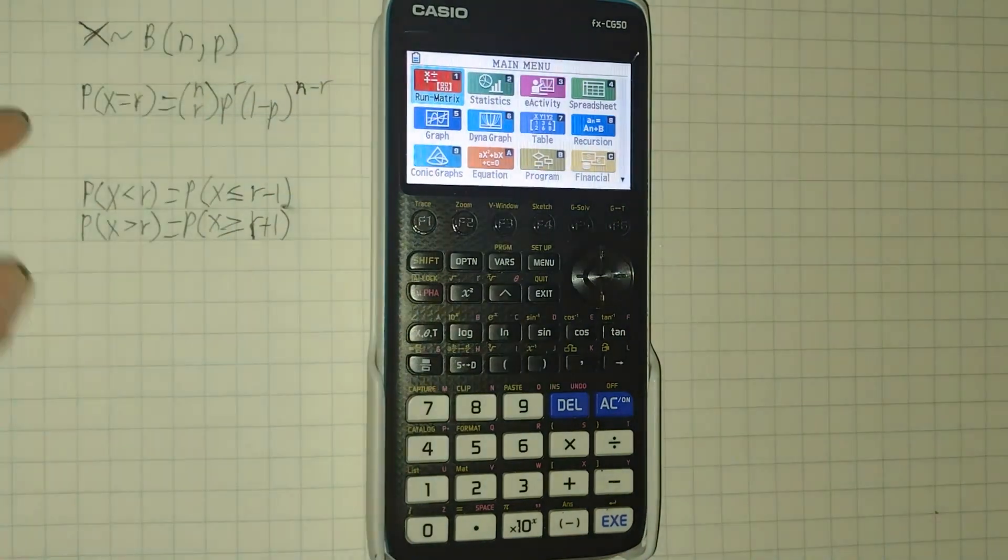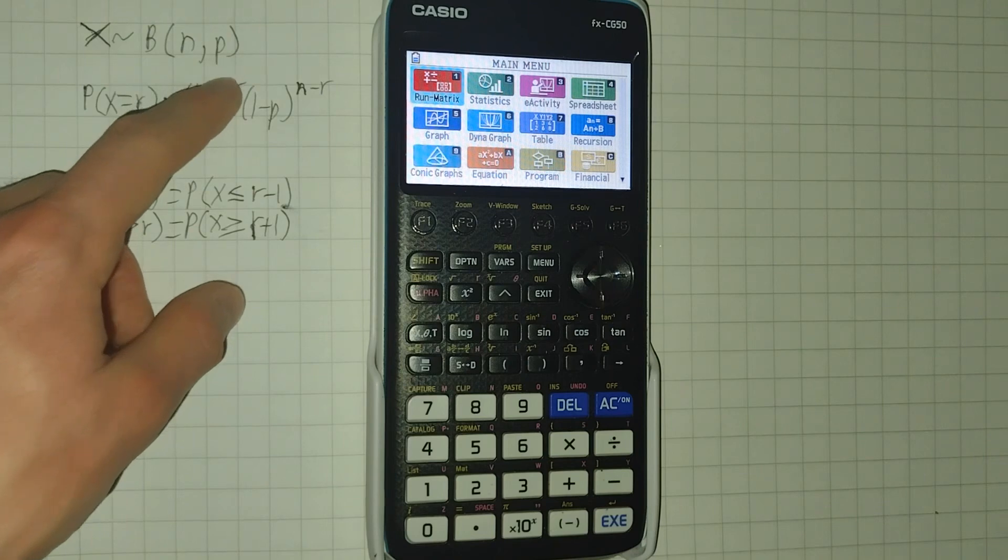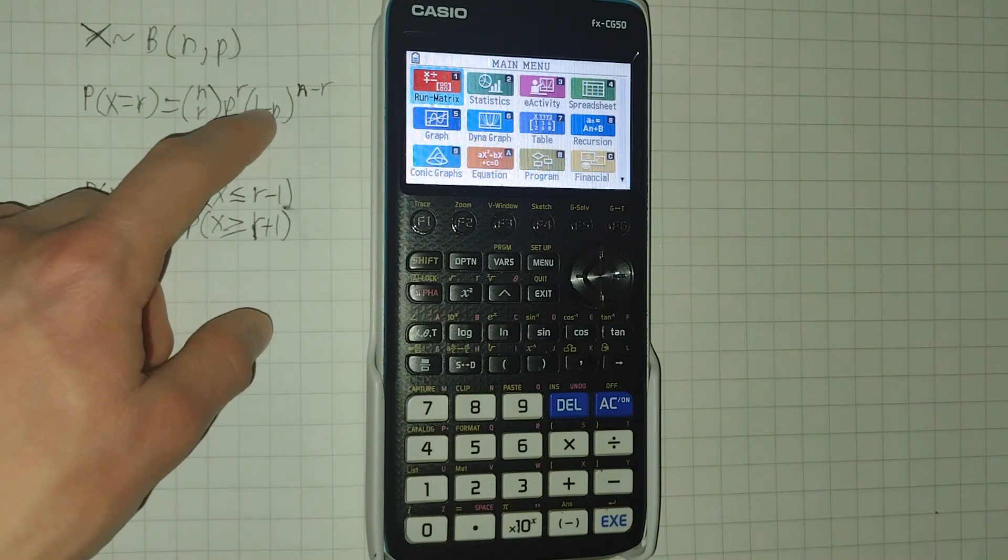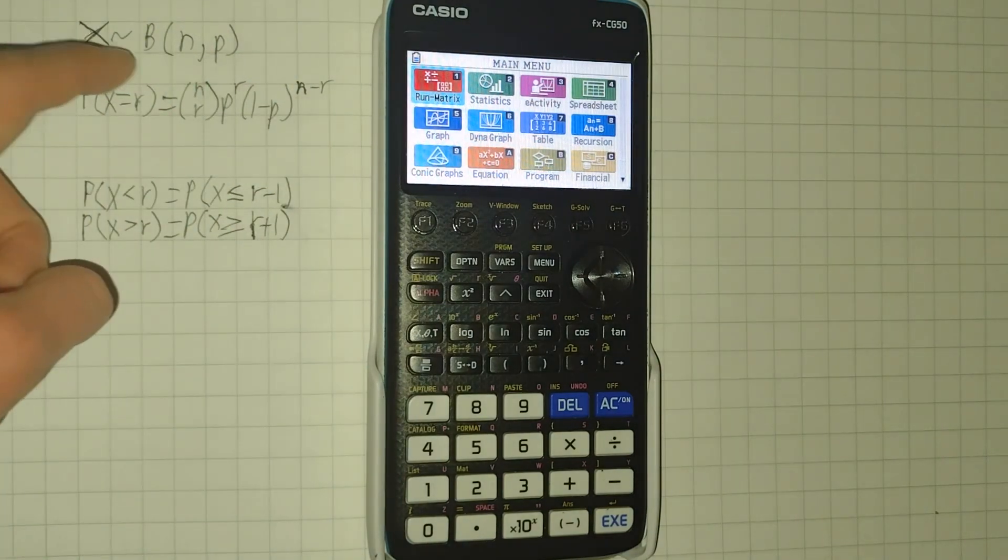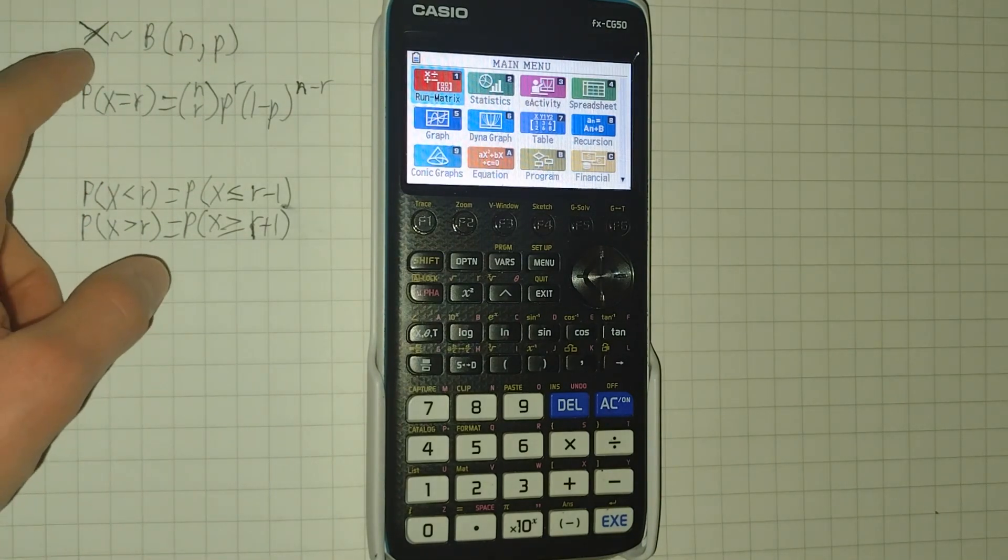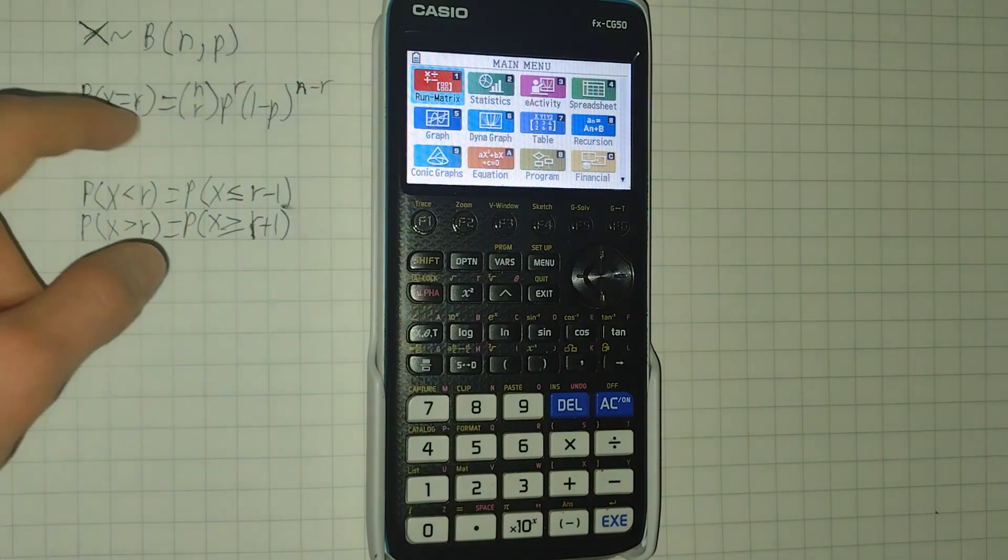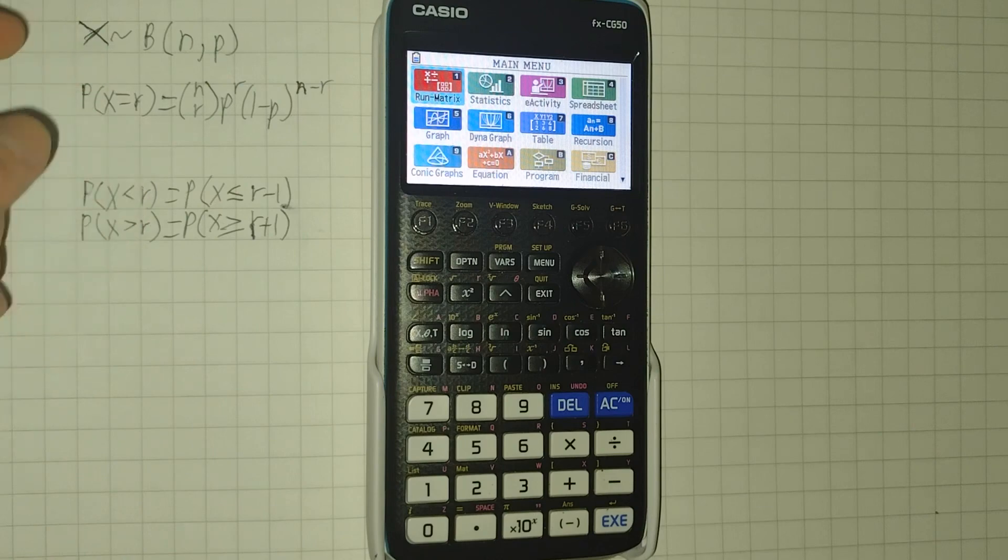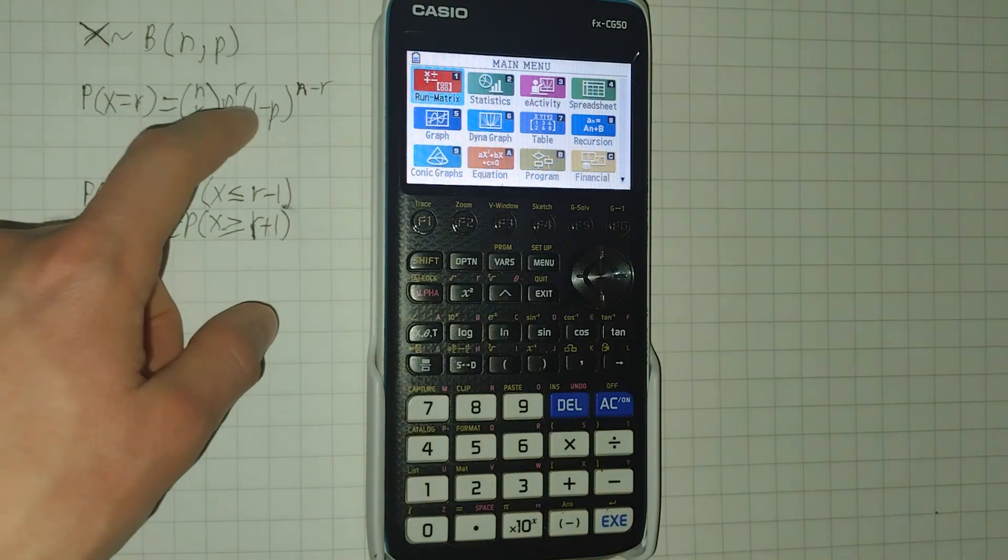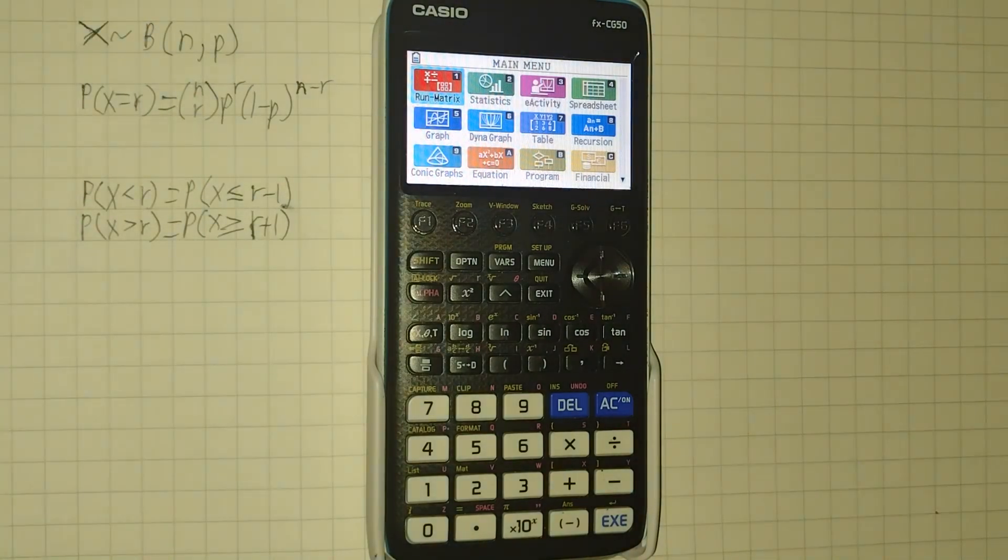So if you've got this situation, the probability of X equaling R will be N choose R, P to the power of R, times 1 minus P to the power of N minus R. N choose R represents the number of different ways in which this random event could occur R times. P to the power of R is the probability of it happening that many times, and 1 minus P to the N minus R is the probability of it not occurring every other time.